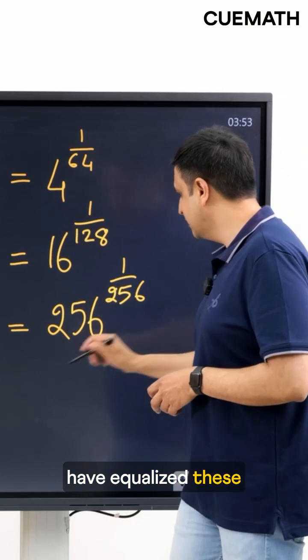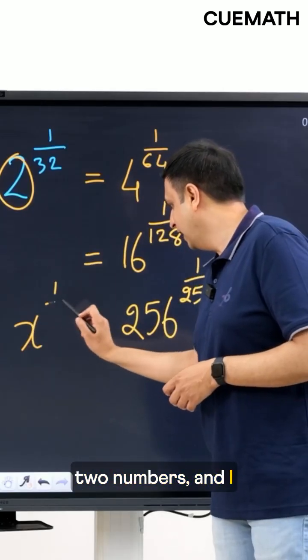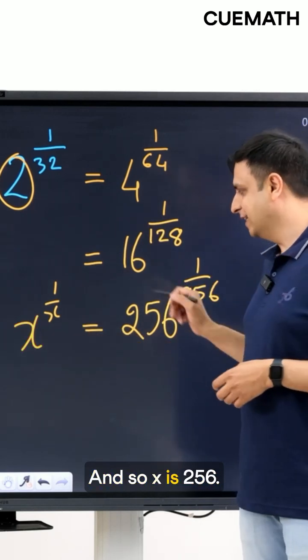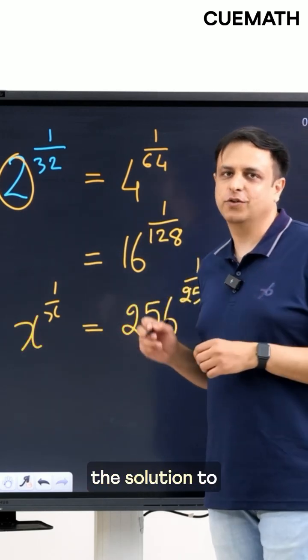All right so now I have equalized these two numbers and I know that this is of the form x to the 1 over x and so x is 256 and that is the solution to this equation.